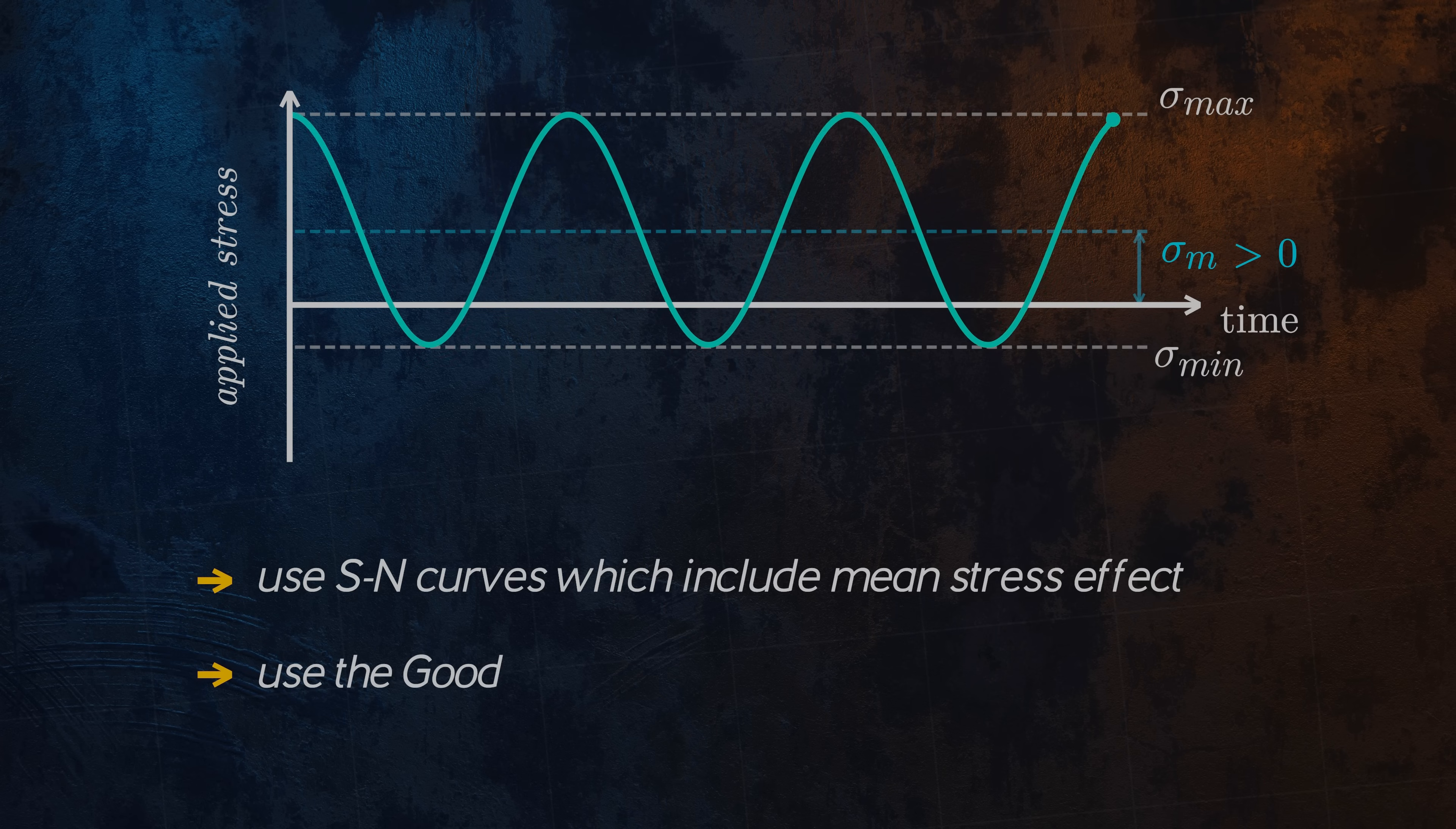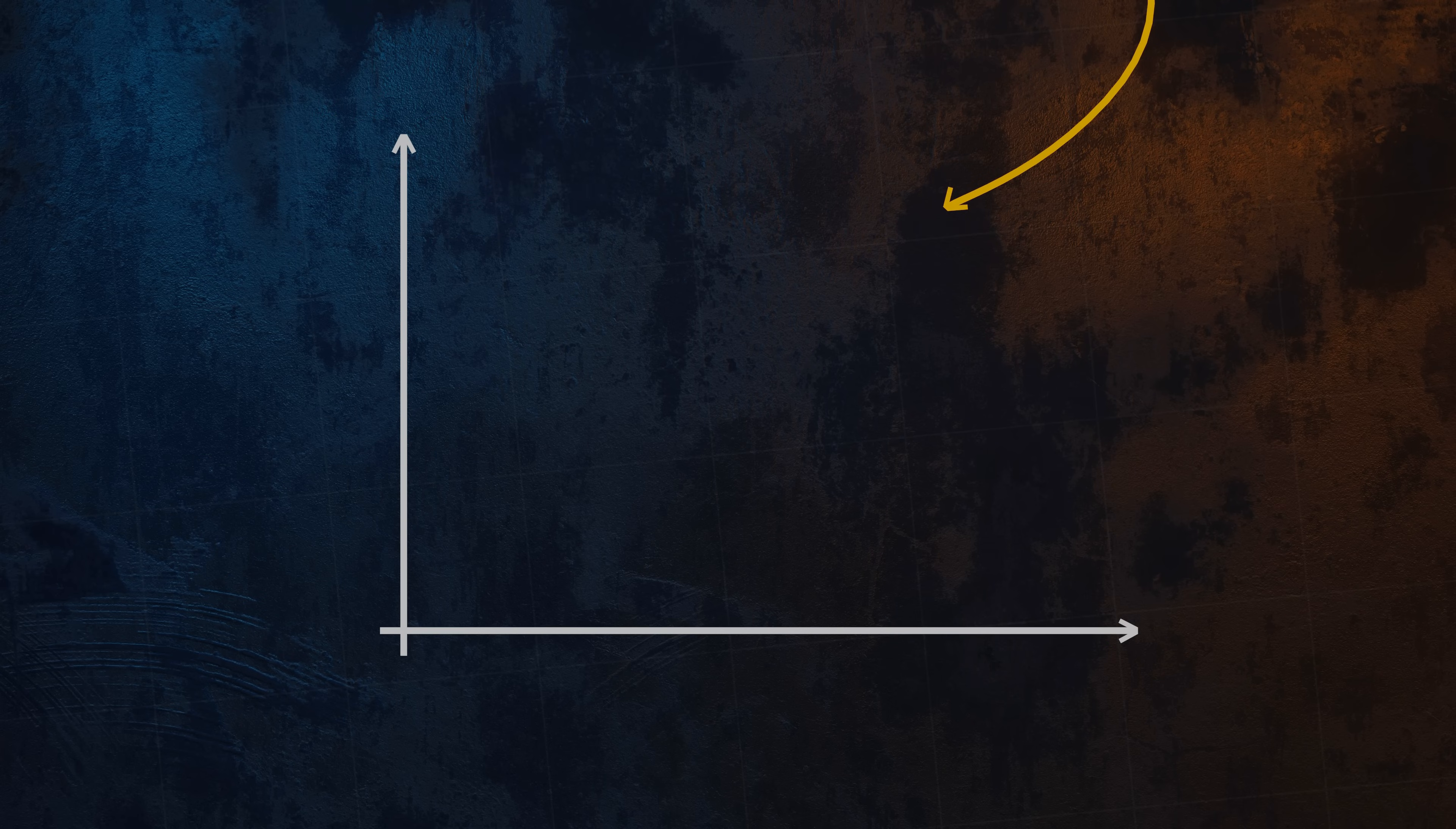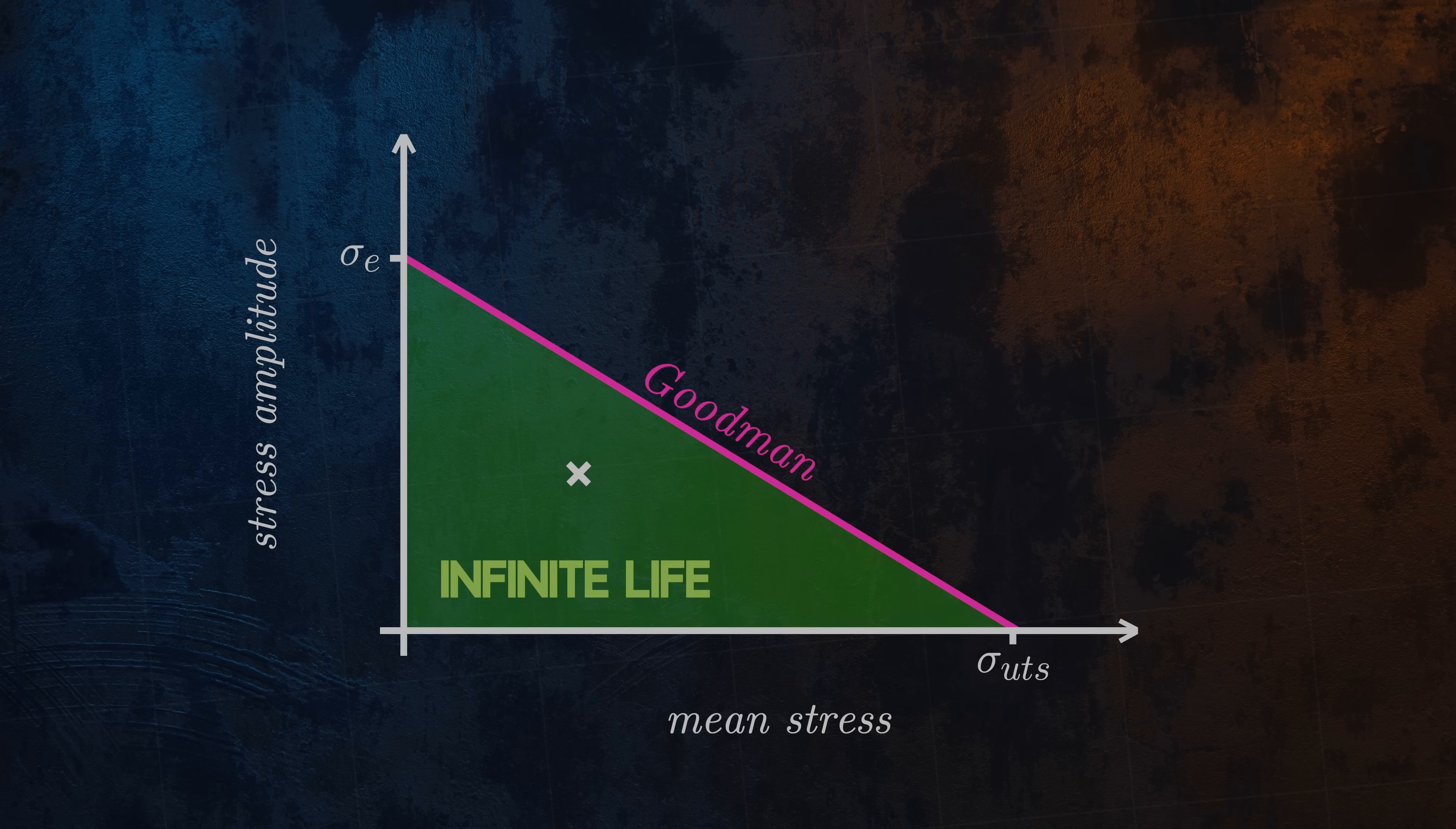Another approach is to use the Goodman diagram, which adjusts the endurance limit to account for a mean stress. Let's see how it works. On a Goodman diagram, the mean stress is shown on the horizontal axis and the stress amplitude is shown on the vertical axis. A straight line is drawn between the endurance limit at a mean stress of zero and the material ultimate tensile strength at a stress amplitude of zero. If our cyclic loading conditions are located below the Goodman line, our component will be safe from fatigue failure.